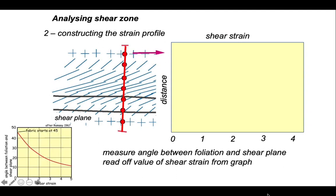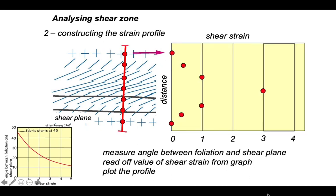We're going to use this graph. Because we're using the new shape fabric, the new foliation. So we can just measure the orientation of the foliation relative to the shear plane. And read off what the shear strain is. And then plot it as we go. And here is the result.